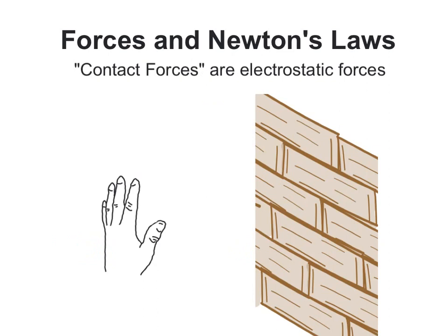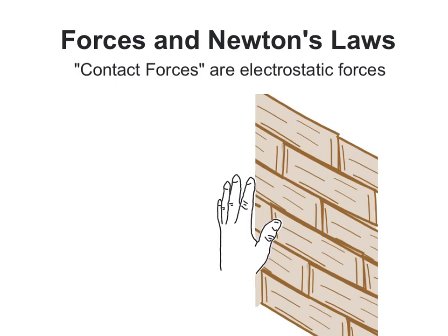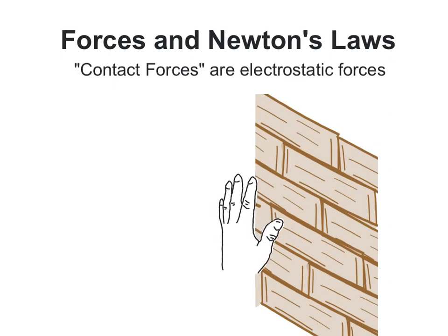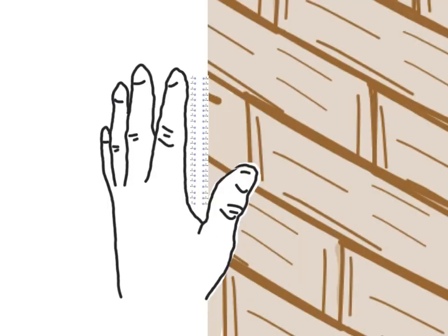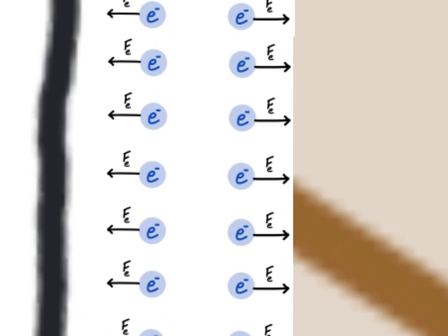But what about the force of physically contacting something? Physical contact was not on our list of four forces. So how can you tell that you're touching a wall? When you touch something, the two surfaces have outer shell electrons that get really close to each other and repel. So all contact forces are electrostatic repulsion.